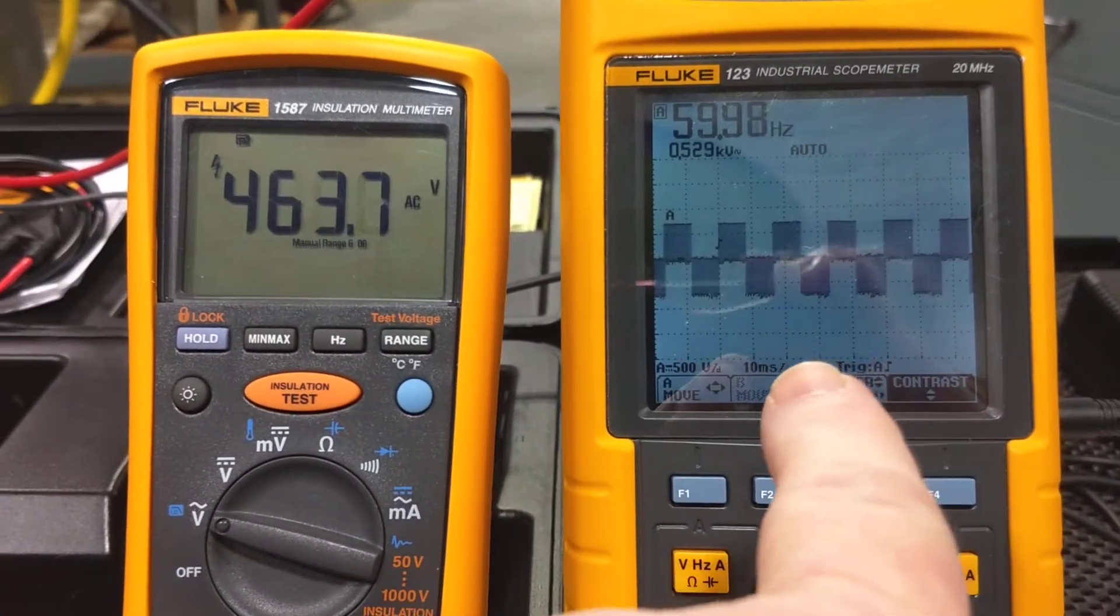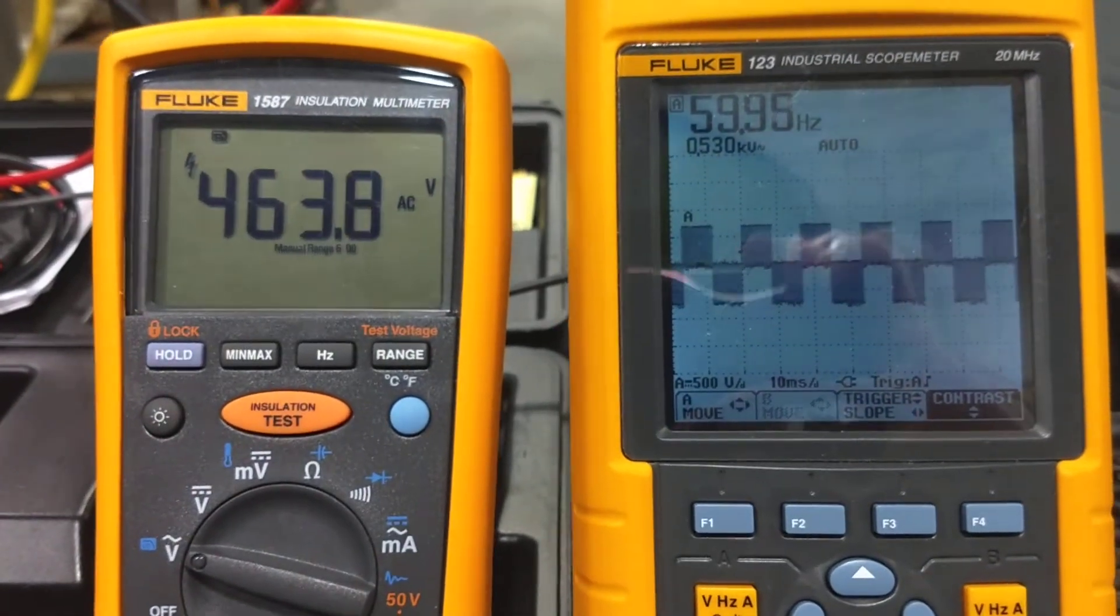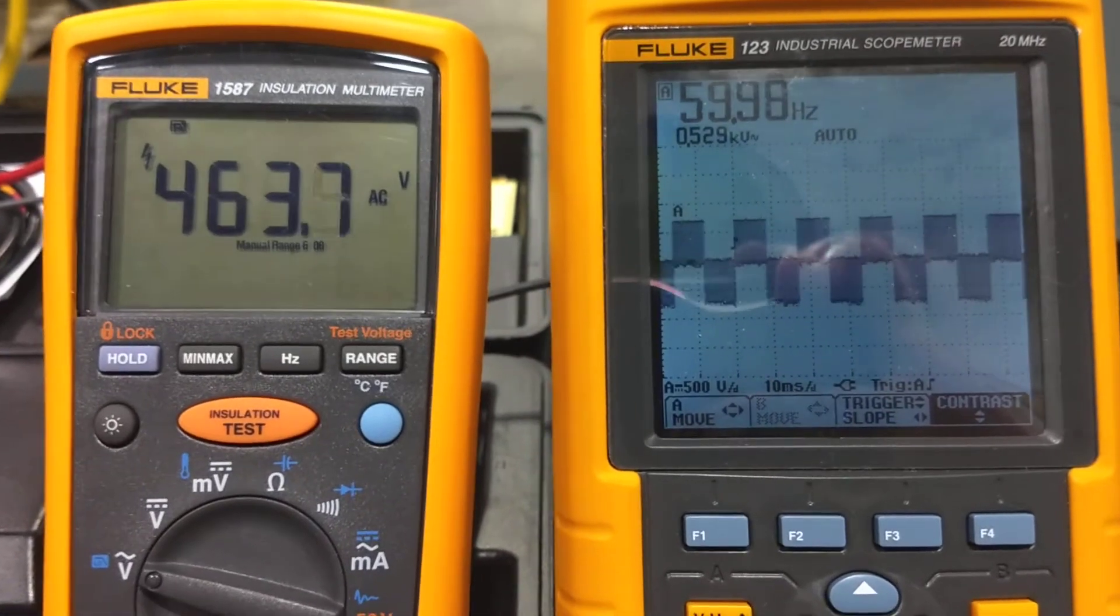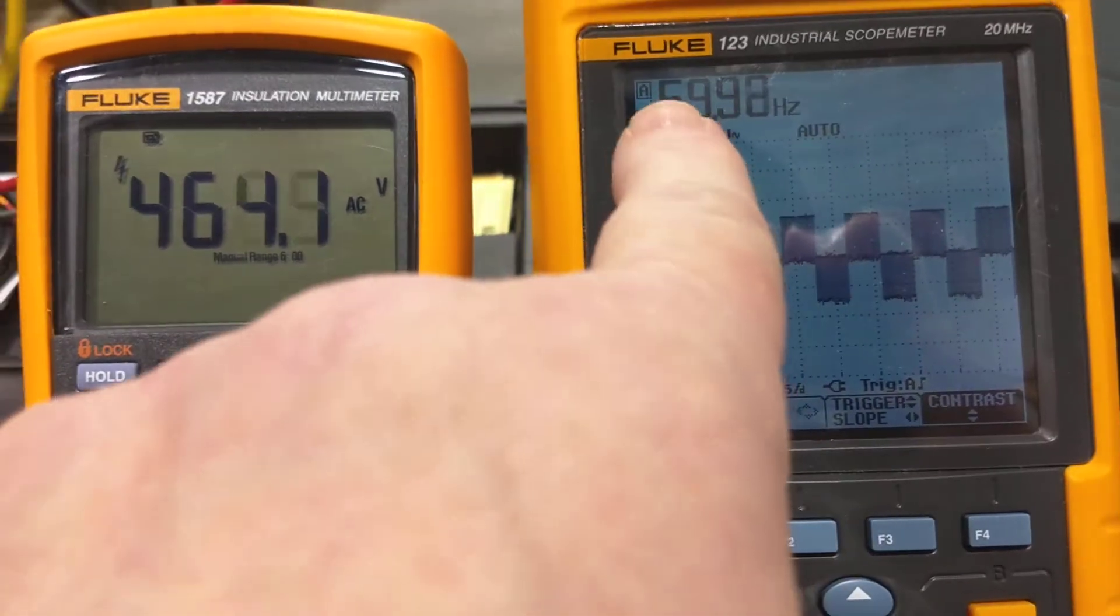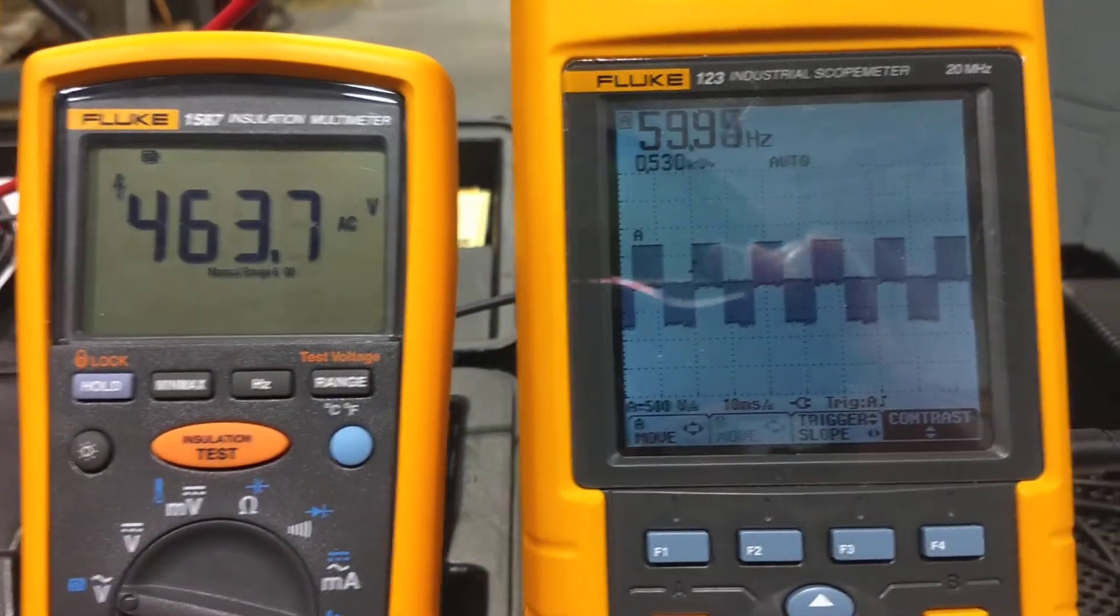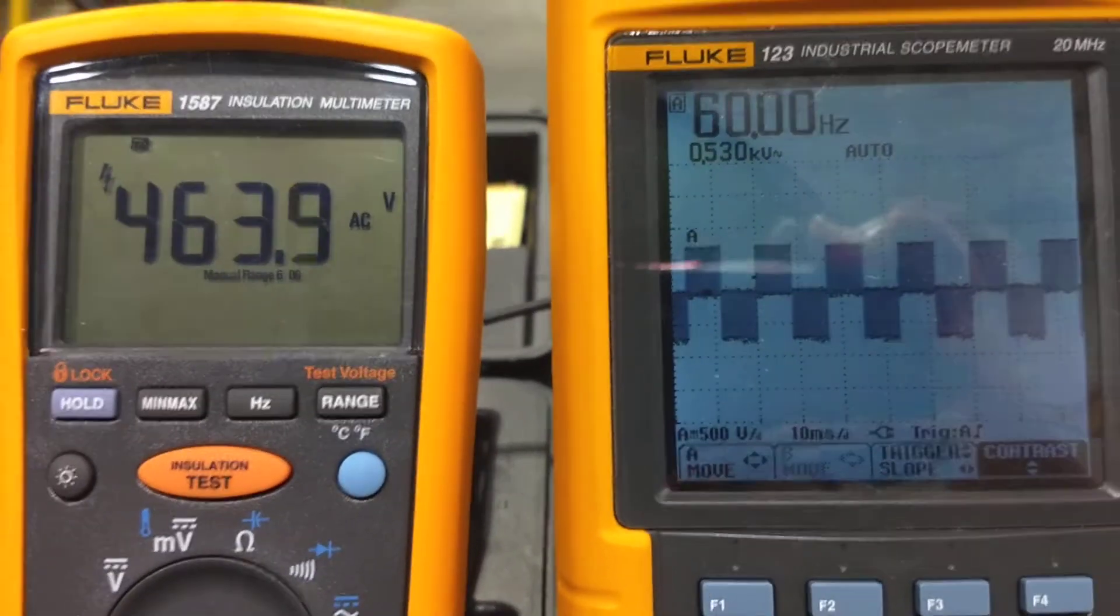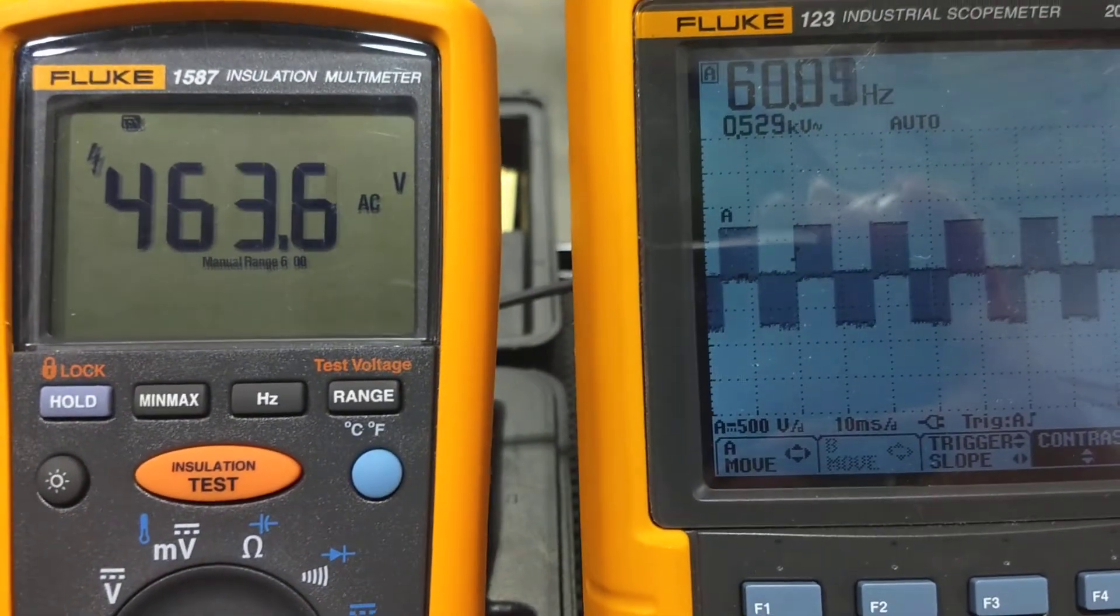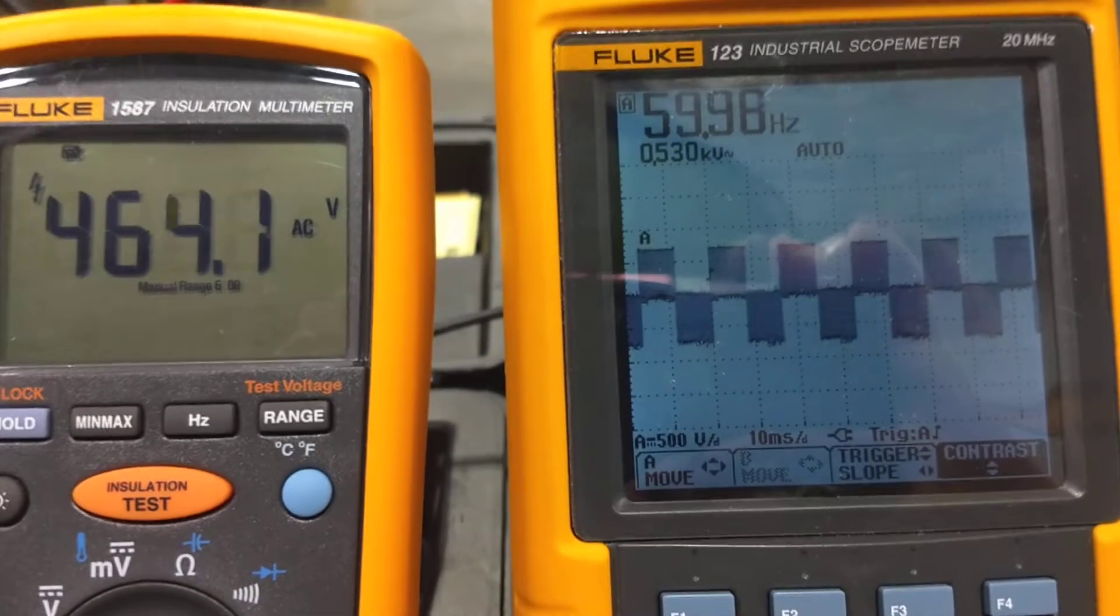The scope meter, I'm using it just to show you how the waveform looks leaving the VFD, that you have a PWM pulse-width modulated output that looks like a square wave. And as you can see right now on the scope meter, it's running right at 60 hertz. And that's what the drive is set for on speed right now. But the funny thing is when you look at the voltage on the scope, it says that it's 530 volts or 0.529 kilovolts, which is really high.